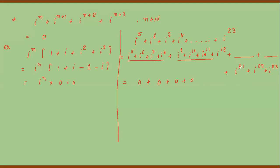For the remaining terms: iota^21 — dividing 21 by 4 gives remainder 1, so this equals iota. Iota^22 — dividing 22 by 4 gives remainder 2, so this equals iota² = -1. Iota^23 — dividing 23 by 4 gives remainder 3, so this equals iota³ = -iota. Then we identify which form each remaining term belongs to and evaluate accordingly.